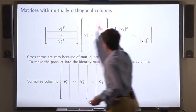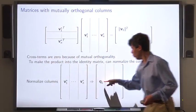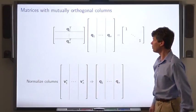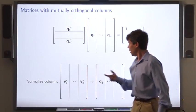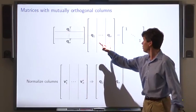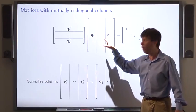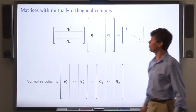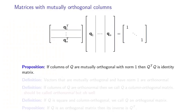Now, if we take these columns and we normalize them, renaming them q1 through qn, then we take the transpose of that matrix, multiply it by the matrix. Because the norms of the columns are all one, the diagonal elements of the product are also all one. So we see that if the columns of a matrix q are mutually orthogonal and they all have norm one, then q transpose times q is the identity matrix.